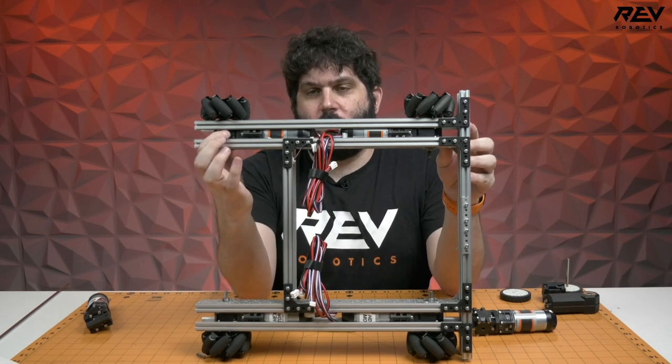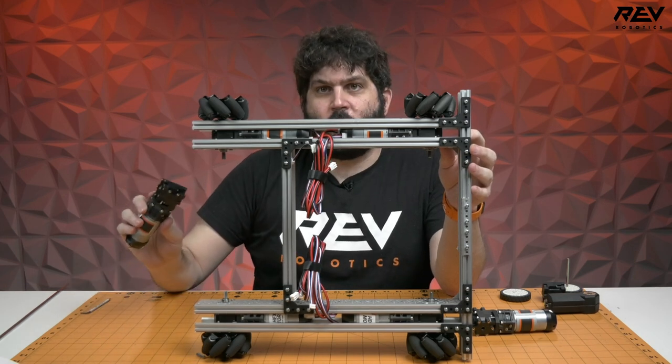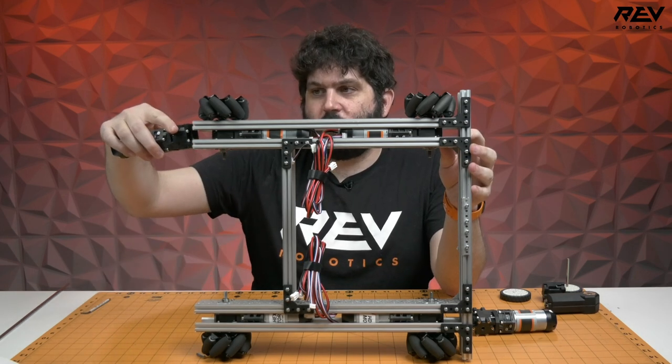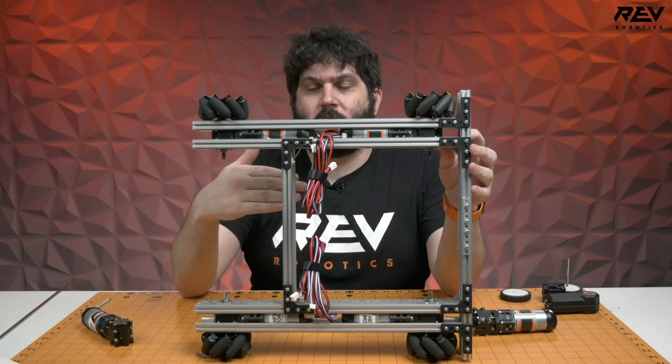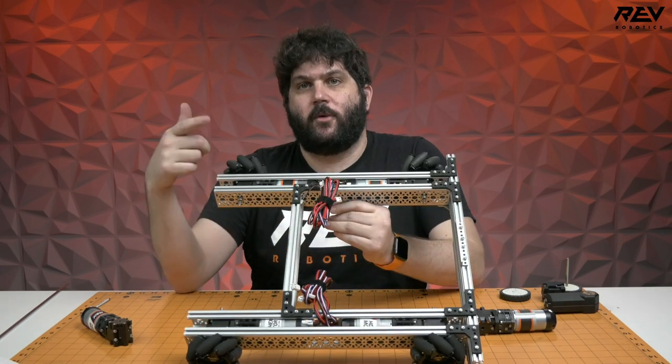And instead of the ultra planetary and HD hex motors coming straight out or with a chain or a belt, we're using the ultra 90 degree gearbox in between the frame rails. This is designed perfectly to fit in the exact same spacing as all of our standard drivetrain kits from the V3 starter kit or beyond. So it's a very easy swap or addition.